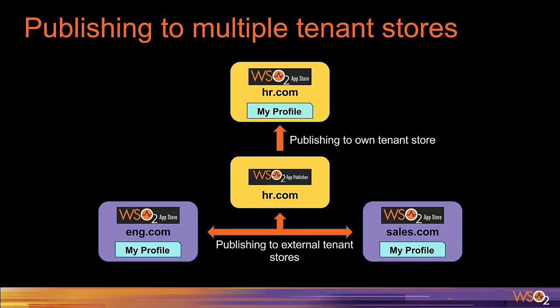If a user wants to access a web app from another tenant, they should first login to their own tenant store, then come back and browse the other tenant stores to access public apps. There is another use case where one tenant wants to advertise an app in other tenant stores so users can easily find it without browsing all stores. For example, the HR department can publish an advertising entry in other department stores. Users in those stores can find the app while browsing their own store. To do this, the HR tenant should use the Publish to External Store feature by configuring external stores — this feature is currently available only for web apps.